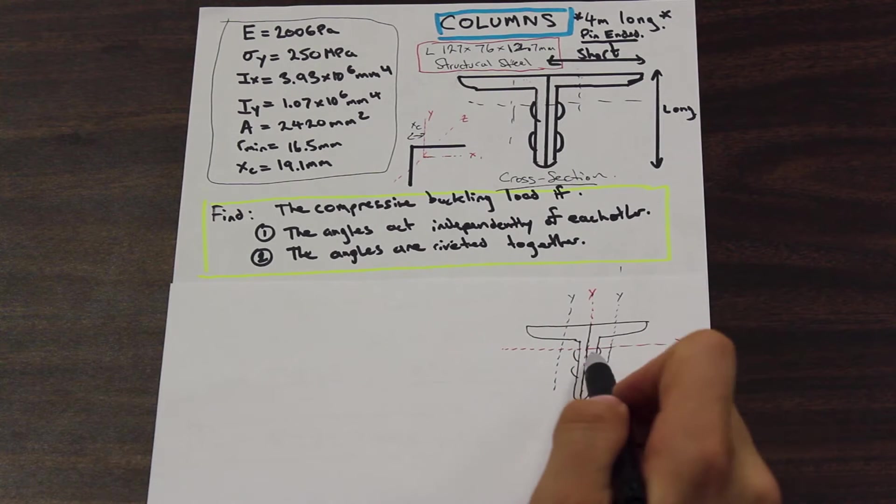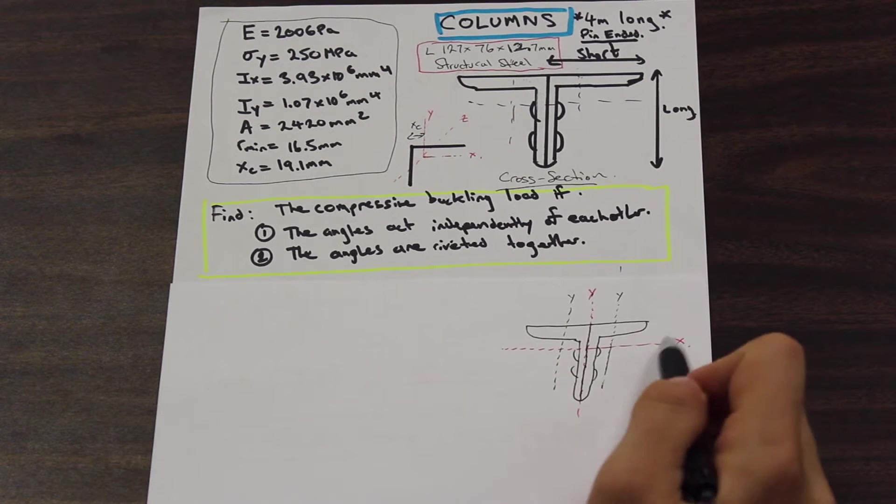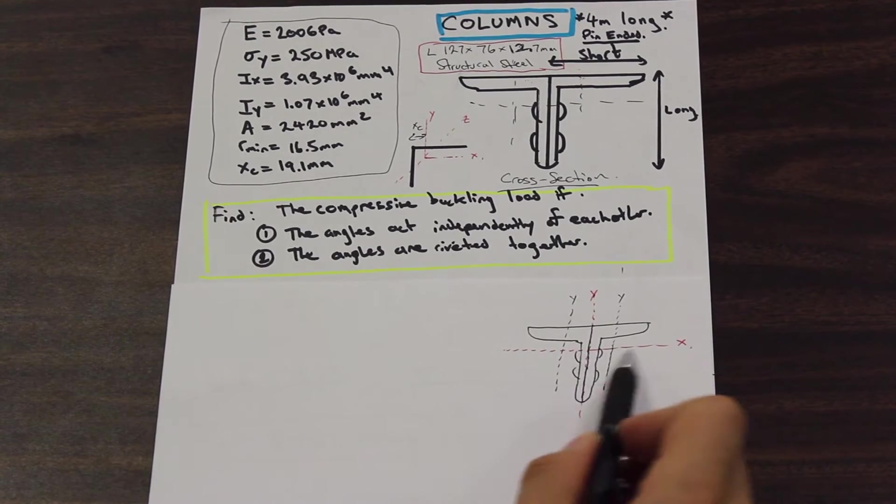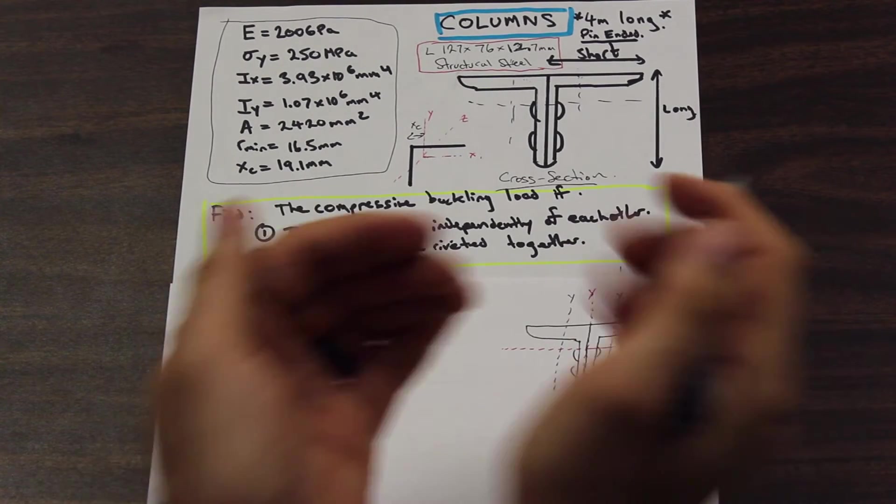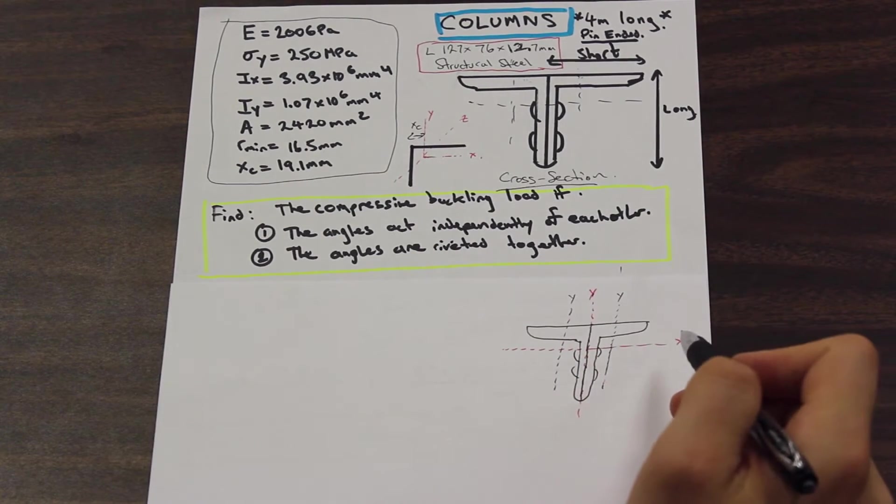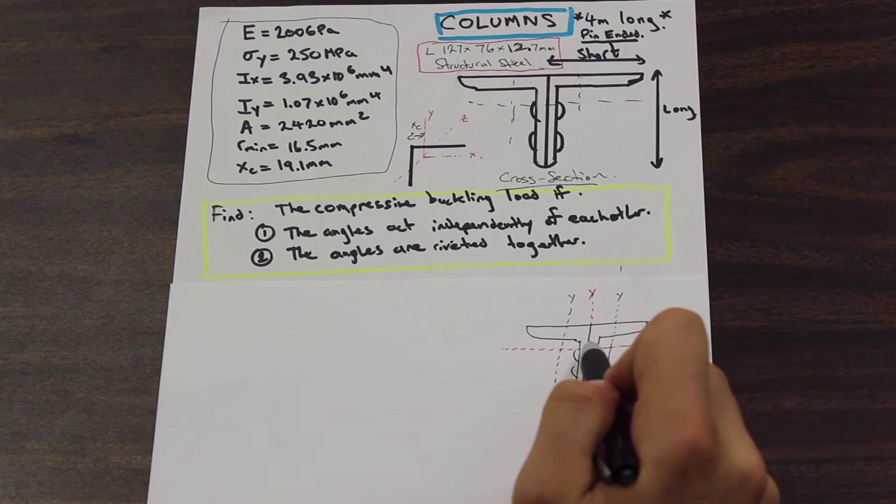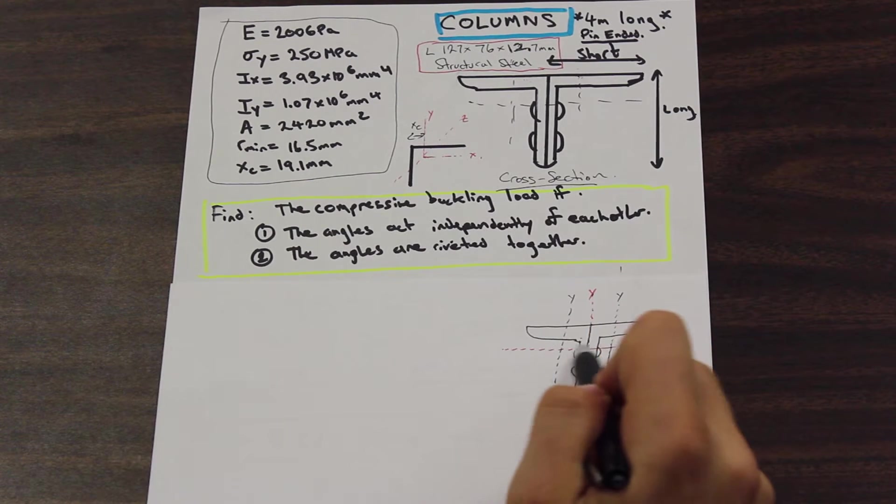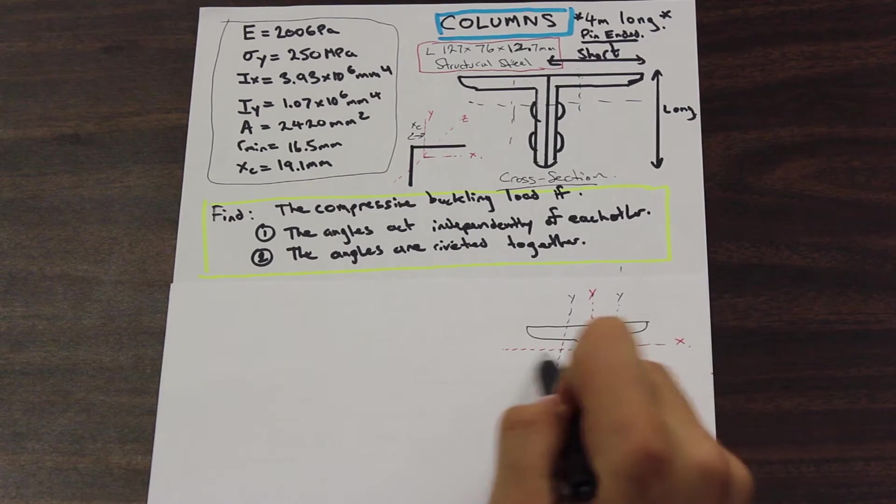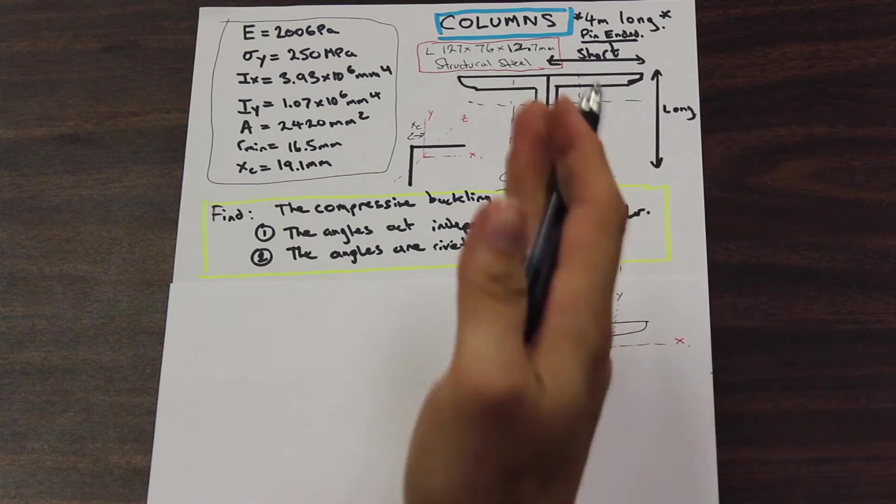As we can see here, the moment of inertia in the x-axis doesn't change if we rivet them together. It's going to get bigger, but both angles are still passing through the moment of inertia of the x-axis. So there's no parallel axis theorem.